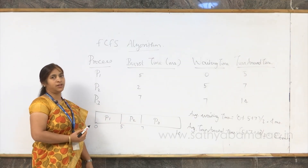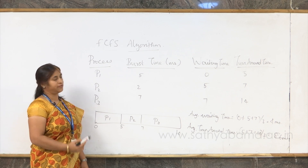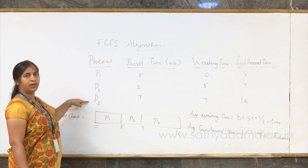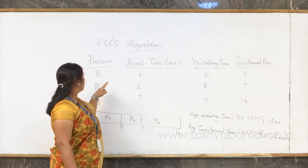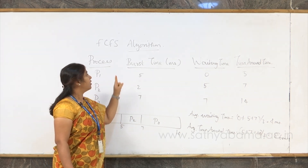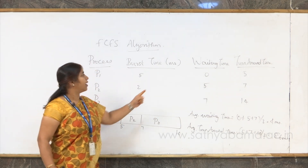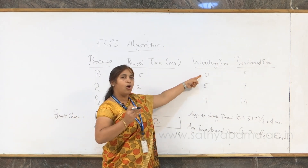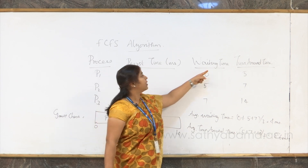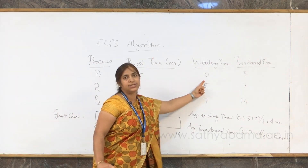Let us see the first algorithm, the simplest algorithm — FCFS, that is first come, first serve. We have 3 processes: P1, P2, and P3, with burst times of 5 milliseconds, 2 milliseconds, and 7 milliseconds respectively. Burst time is nothing but the time taken to complete the job. Waiting time is how long each process waits to get the CPU, and turnaround time is the summation of burst time and waiting time.